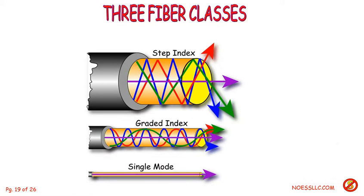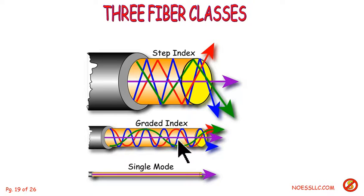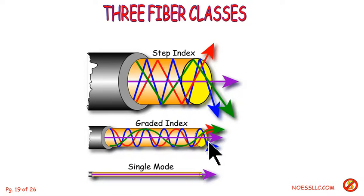Three kinds of fibers: step, graded, and single mode. Step index is a big fiber where lots of beams can launch in and they bounce around inside like inside of a chrome pipe. Graded index is a little more like your glasses — it bends the light beam so they tend to arrive more cohesively, because the receiver has to have a certain number of photons before it can determine whether that's an on pulse or an off pulse.